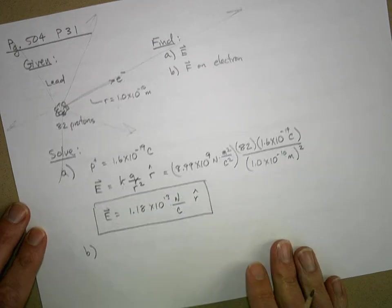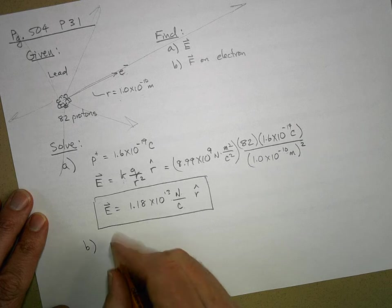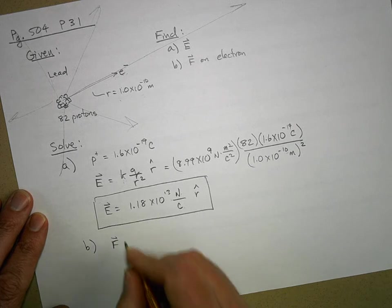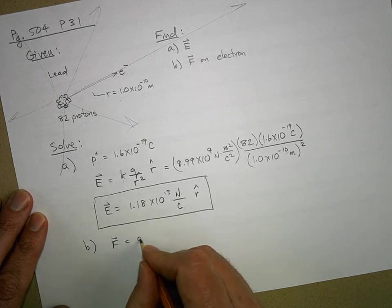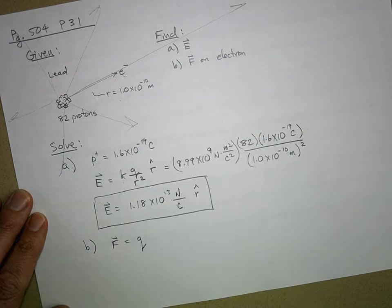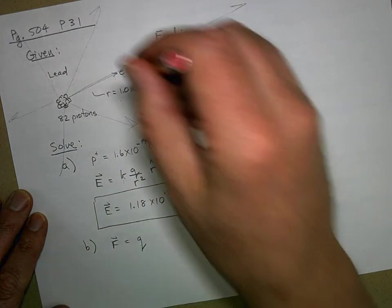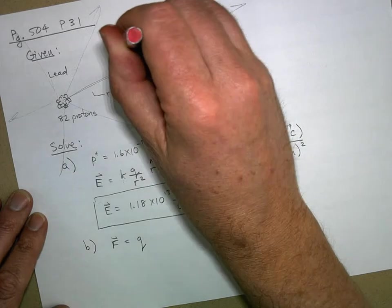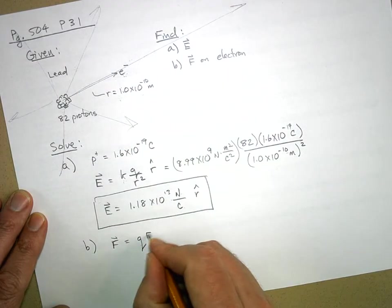Now let's do part b. The force on an electron is equal to q, which is the charge of my electron, not the charge of the proton, but the charge of the thing that we're putting in the field, times the electric field.